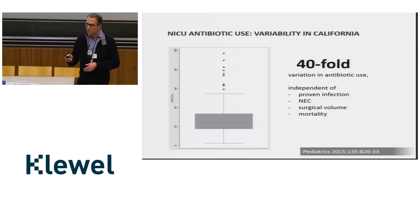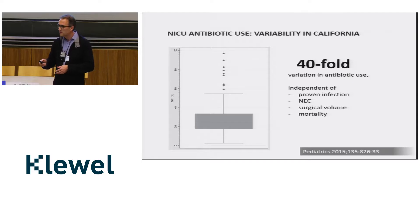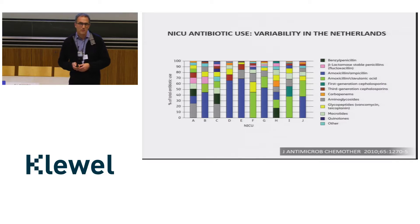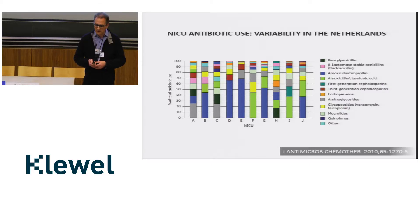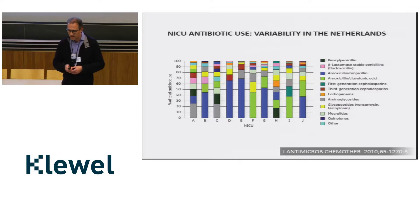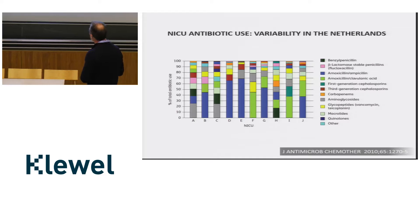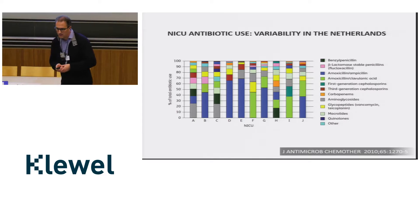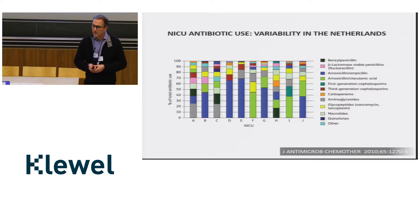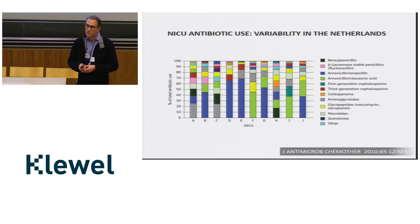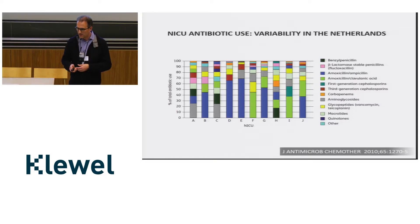This variation was independent of proven infection or NEC, and it was also independent of mortality. Looking at whether we are in agreement on what antibiotics to use — a study from the Netherlands looked at about 10 NICUs, and every color represents another antibiotic class. The picture is very colorful: at least in the Netherlands, they are not in agreement on what they are giving in their NICUs.